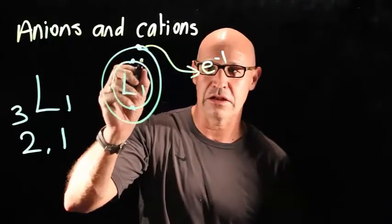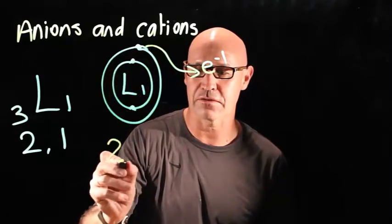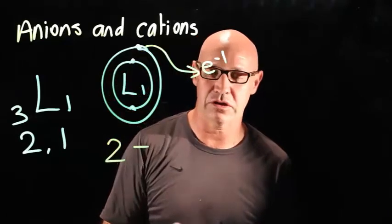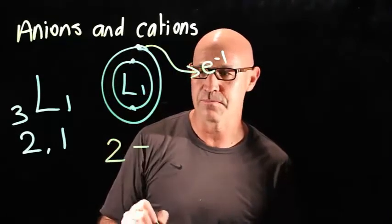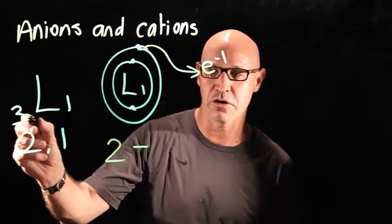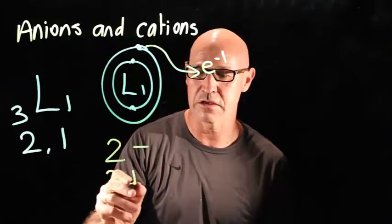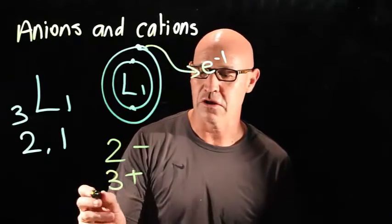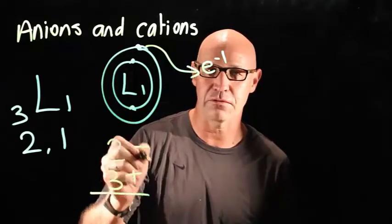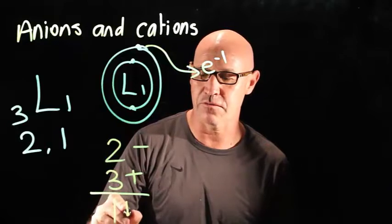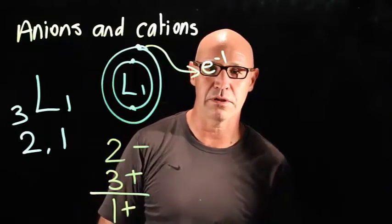So then it only has two electrons left, so two negative charges, but it's got three protons, so it's got three positive charges. So overall, there's one more positive than there is negative. So it's got an overall charge of one plus.